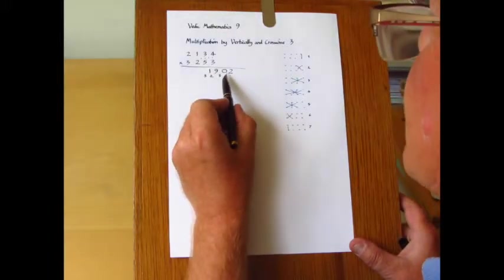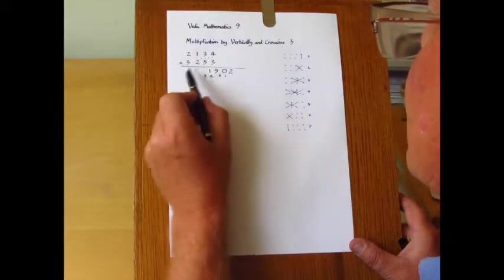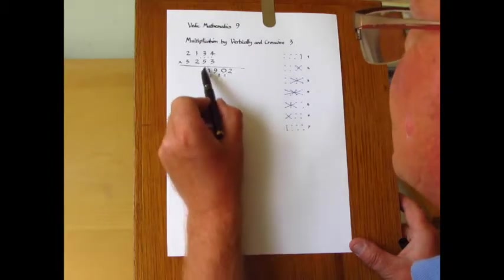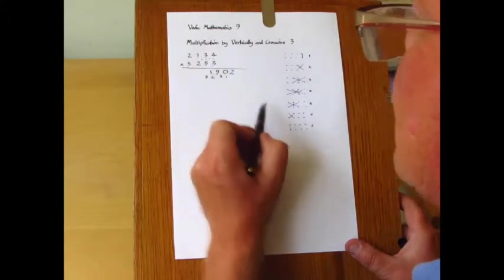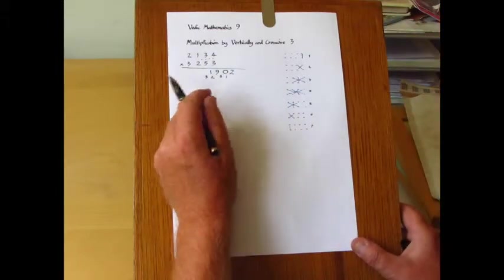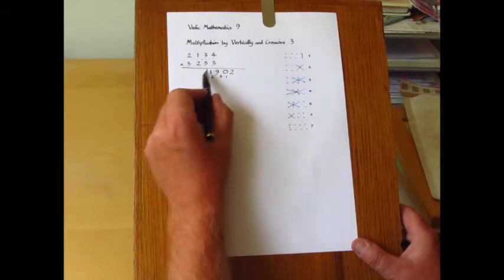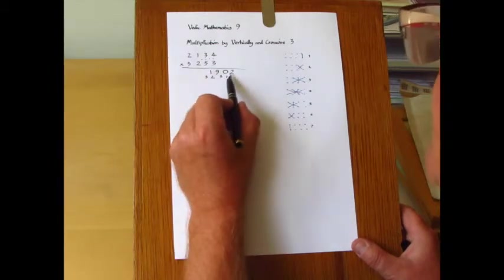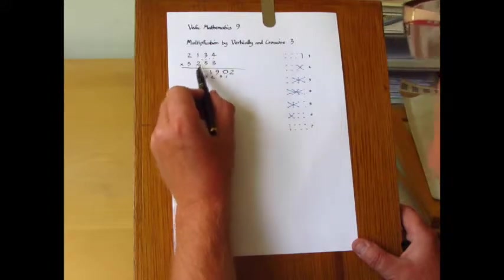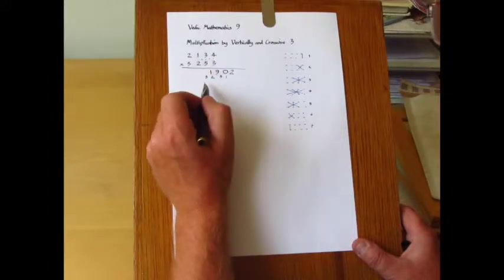Now notice it doesn't really matter where we put the digits in the answer line. I have not placed this units digit in a units column and the Vedic mathematics system does this quite frequently. It frees up the idea that you have to place the answer digits in the same columns as in the numbers to be multiplied.